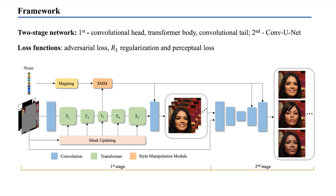The proposed Mask-Aware Transformer is a two-stage network. The first stage is designed to recover content structures in the missing area. It consists of a convolutional head and tail and a transformer body in the middle. The second stage adopts a ConvUNet architecture to refine high-frequency details. During training, we use adversarial loss, R1 regularization, and perceptual loss. We will talk about the three architecture improvements one by one in the following.